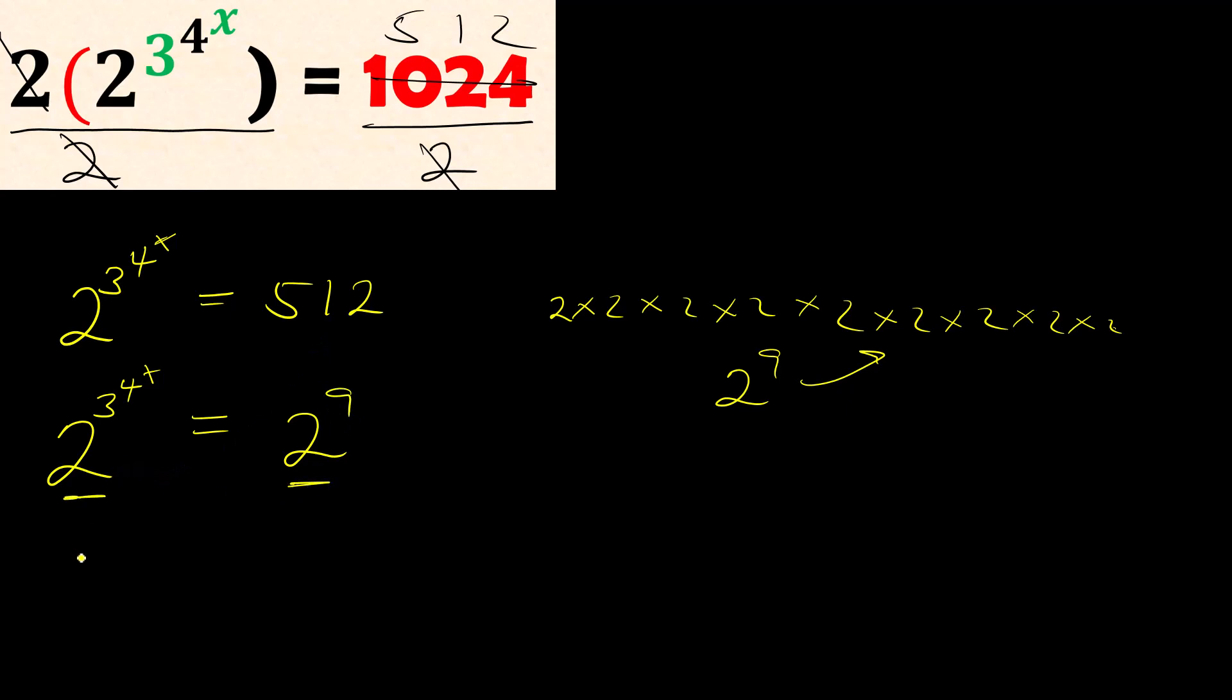Looking at the left-hand side, the base is 3. We can do the same to the right-hand side by changing 9 to 3^2. So we have 3^(4x) = 3^2. The bases are equal, so we can equate the powers.